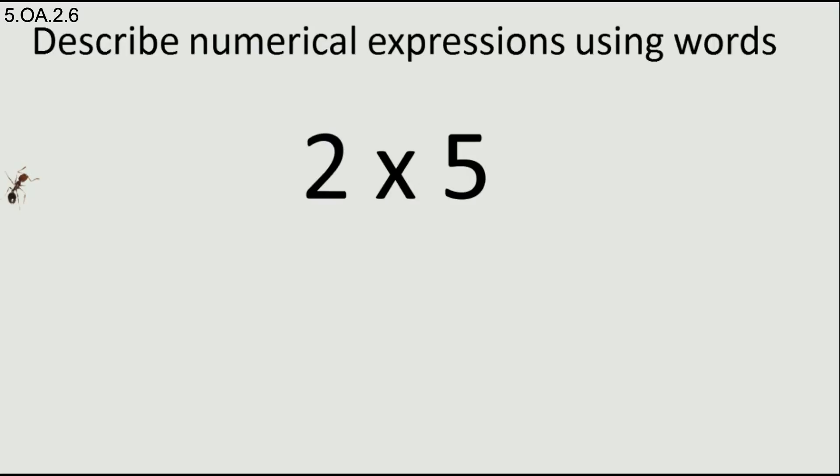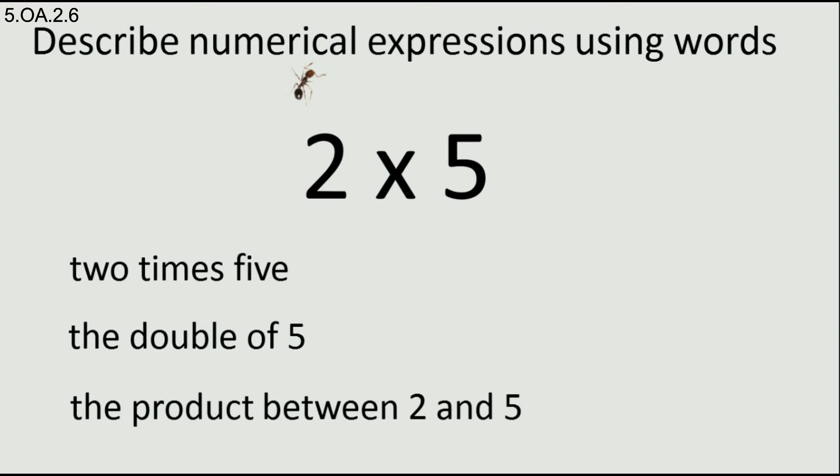We have here 2 times 5. How could we translate this into words? There are many ways to do this, let's find some of them. For example, 2 times 5 or the double of 5. Double only means multiplied by 2 or times 2. The product between 2 and 5.